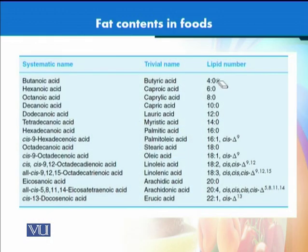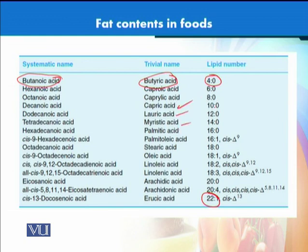Fatty acids are generally even-numbered carbon compounds, ranging from 4 to 22 carbons. They have various names — for example, butyric acid is also called butanoic acid. The list includes caprylic acid, capric acid, lauric acid, myristic acid, palmitic acid, and more. Different fats and oils contain all these fatty acids together. Most fatty acids are in the cis form. For example, cis-9-octadecanoic acid — trivially known as oleic acid — has one double bond at position 9 in the cis configuration. Linoleic acid is more unsaturated, having two double bonds at positions 9 and 12.